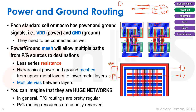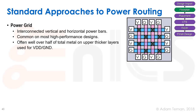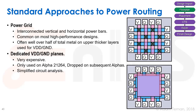Power and ground routing is reserved early in the floorplan and cannot be used for signal or clock routing afterward. The standard approach is a power grid: horizontal and vertical VDD and ground wires, with well over half the total metal on upper thick layers used for VDD and ground. An alternative — used by the DEC Alpha 21264 and some AMD processors — is dedicated VDD and ground planes, which also creates beneficial VDD-to-GND capacitance, but is very expensive in routing resources.